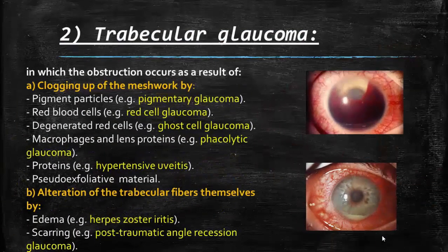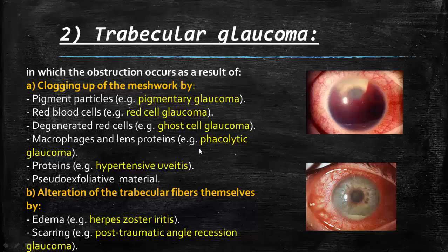In the trabecular type, the obstruction occurs at the level of the trabecular meshwork. It can be caused by clogging of the trabecular meshwork by different causes: like pigment particles as in pigmentary glaucoma; red blood cells as in hyphema; degenerated red blood cells, which is called ghost cell glaucoma; and by lens cortex and lens protein as in phacolytic glaucoma; and by proteins as in uveitis associated with raised intraocular pressure; and in pseudoexfoliation glaucoma. The second mechanism is alteration in the trabecular fibers themselves by edema, as in iridocyclitis, or by scarring like post-traumatic angle recession glaucoma.